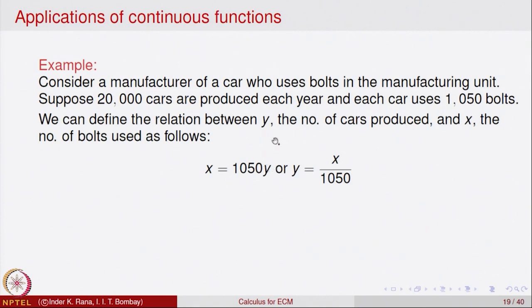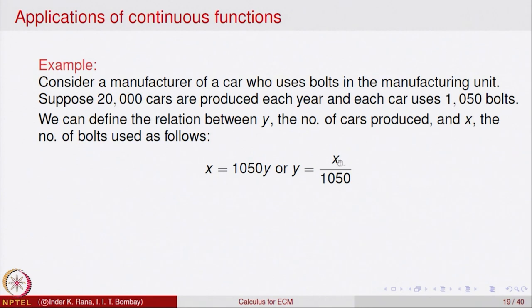We can define the relation between y, the number of cars produced, and x, the number of bolts used, as follows. The total number of bolts used is x = 1050 × y, where y is the number of cars produced. Or we can write y = x / 1050, where y is the number of cars and x is the total number of bolts.